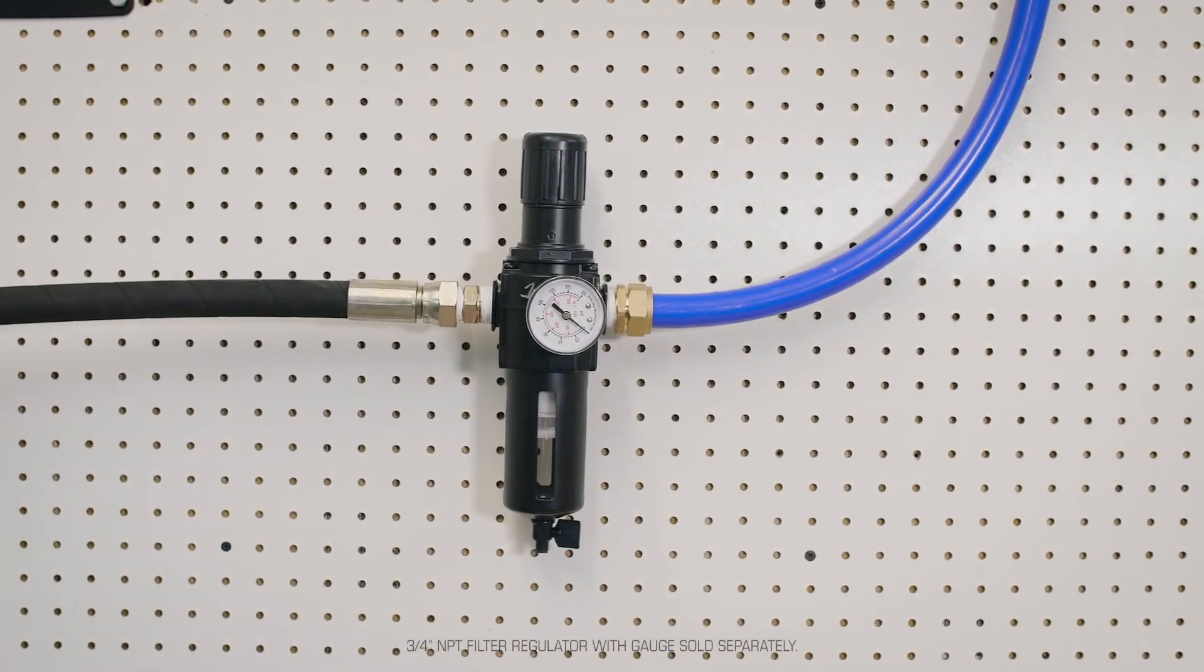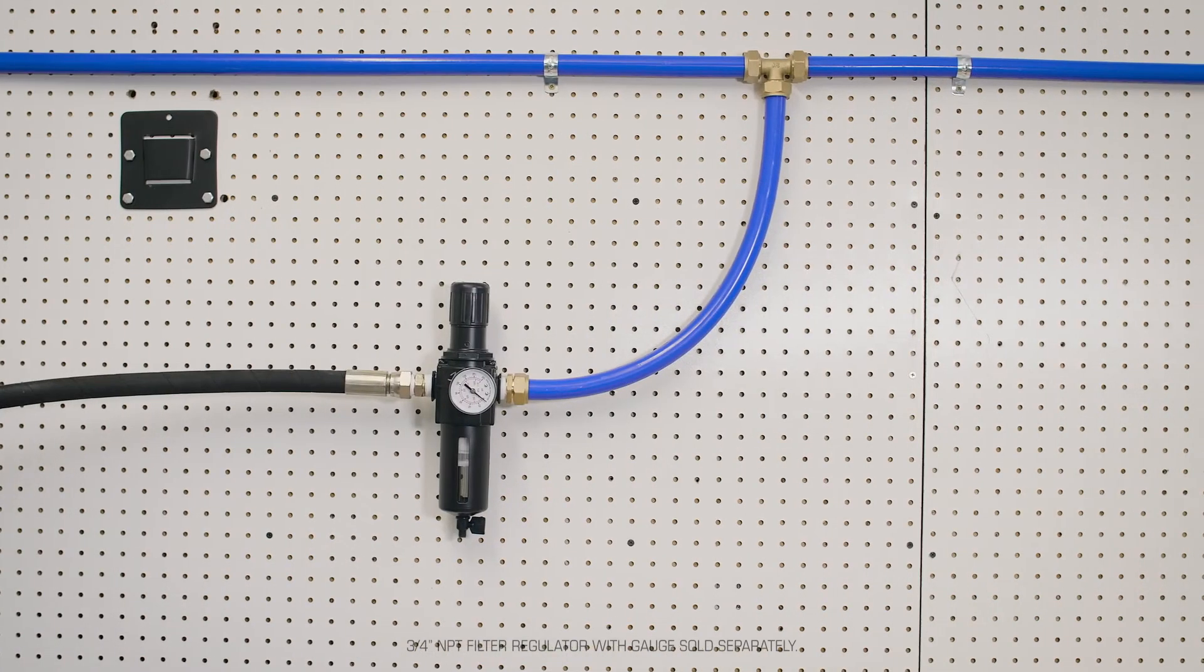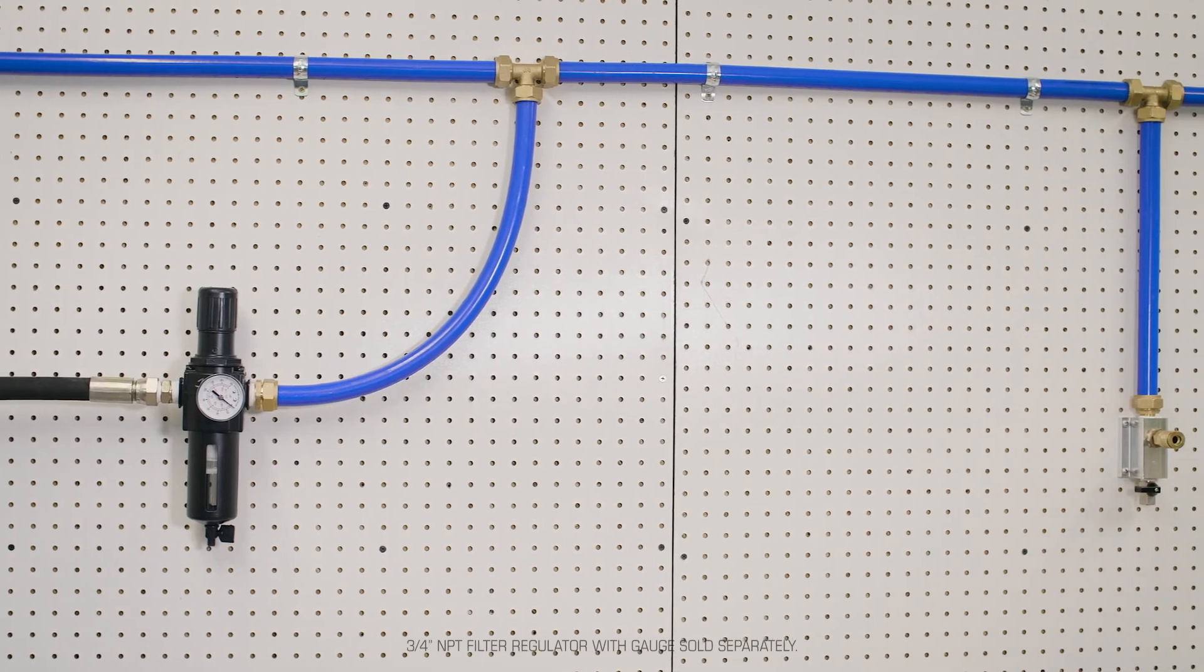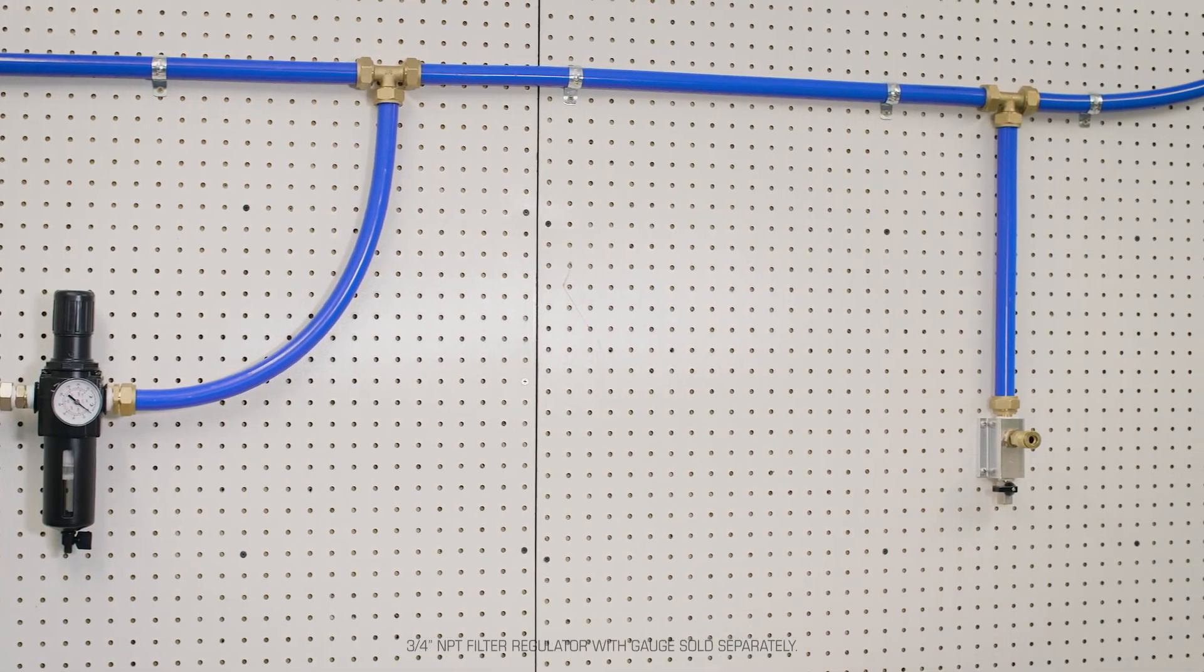It is recommended to have a three-quarter inch hydraulic hose and a three-quarter inch filter regulator installed between your compressor and the air piping system to maximize air quality and output.